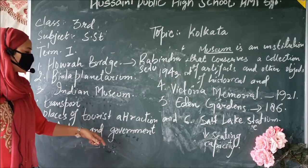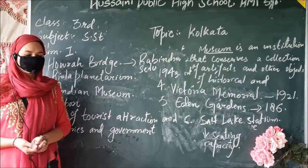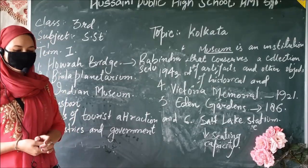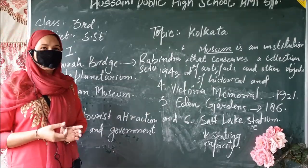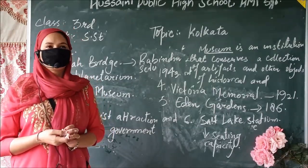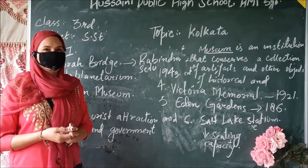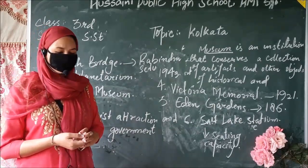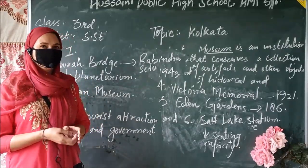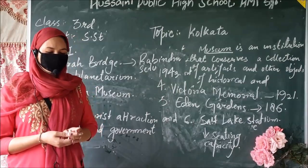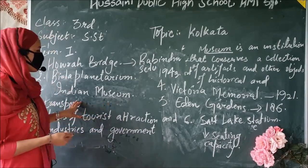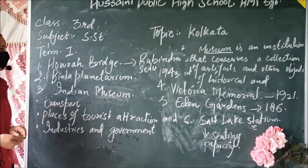Now, industries and government offices. Kolkata is an important industrial city. Jute industry is an important industry in Kolkata. Besides jute industry, there are cotton and silk textile mills, paper mills, tea factories, rice mills, electrical goods industries and leather goods industries. These are some of the industries found in Kolkata.